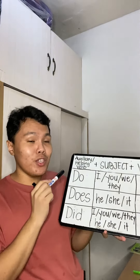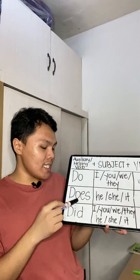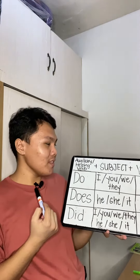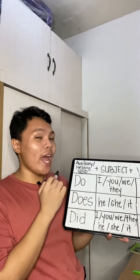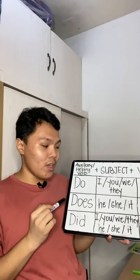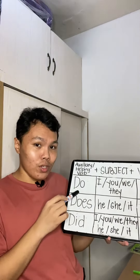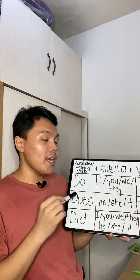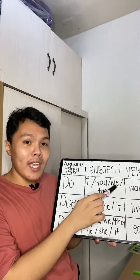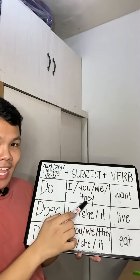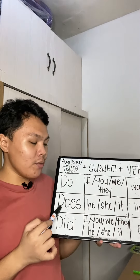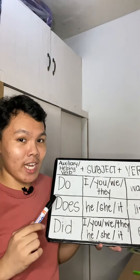When you use do, does, and did to make questions, you should follow this pattern: the auxiliary or helping verb plus the subject plus the verb. When you use do, it should be followed by plural subjects like I, you, we, or they. If you use does, it should be followed by singular subjects like he, she, or it.